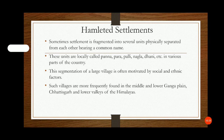Hamleted settlement: sometimes a settlement is fragmented into several units spatially separated from each other but bearing a common name. These units are locally called Panna, Para, Pali, Nagala, or Dhani in various parts of the country. This segmentation of large villages is often motivated by social or ethnic factors. Such villages are more frequently found in the middle and lower Ganga plain, Chhattisgarh, and the lower valleys of the Himalayas.